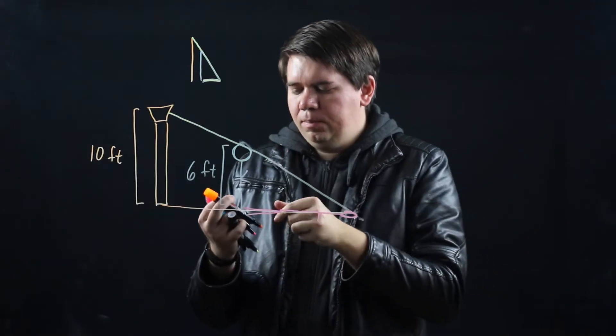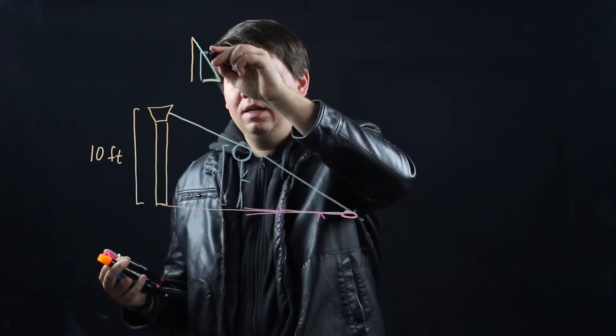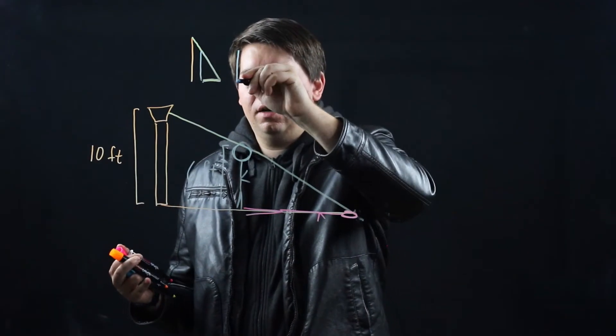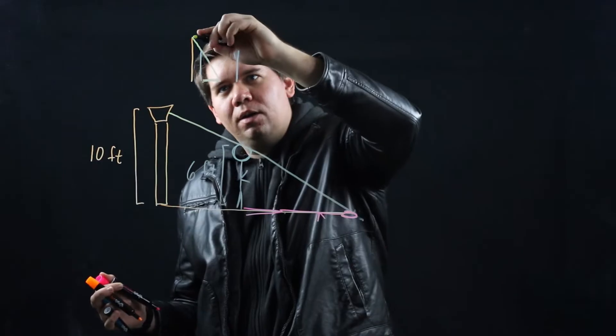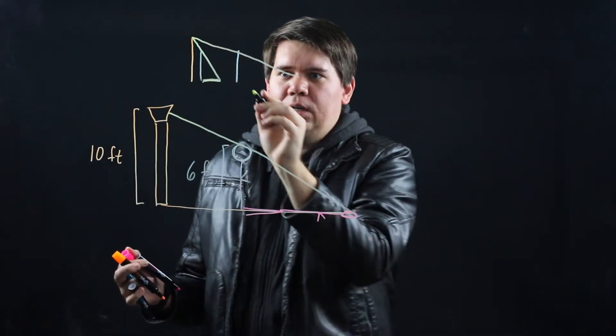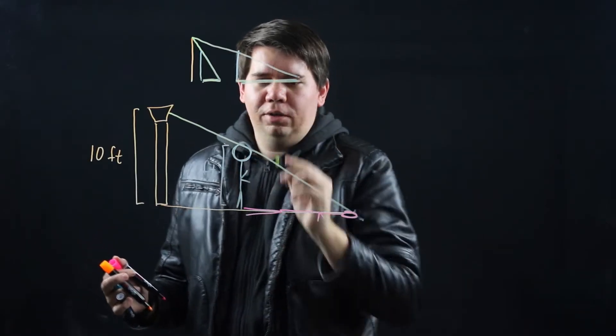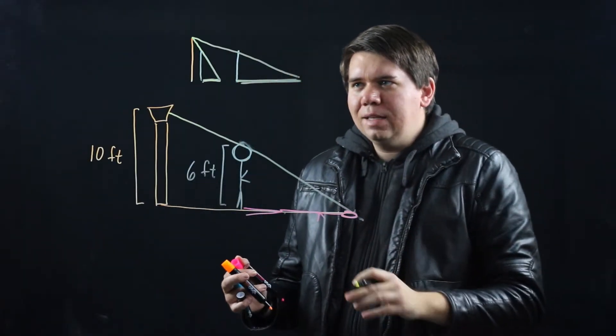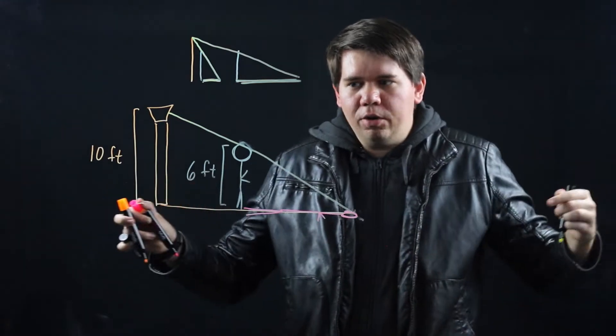But when that same person moves a little bit further away, what happens to the shadow now? Well now the shadow is quite a bit longer. So as our person moves this shadow grows.